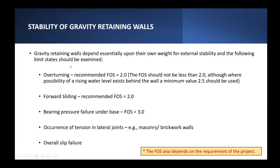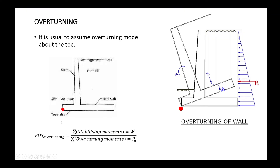The following limit states should be examined: overturning, where the recommended FOS is equal to 2, but it depends on the requirements of the design and the project. The sliding factor of safety recommended is 2.0, and the bearing pressure FOS is equal to 3. We also need to take into account the occurrence of tension in lateral joints, basically for masonry or brickwork walls, and also the overall slip failure.